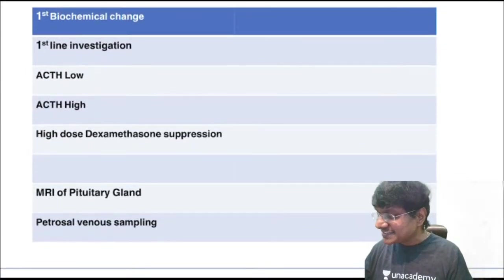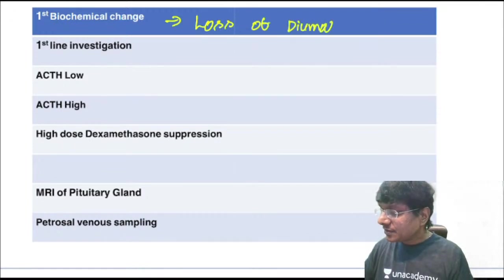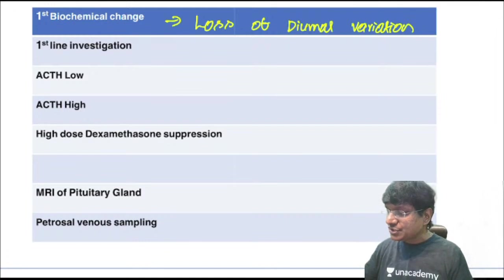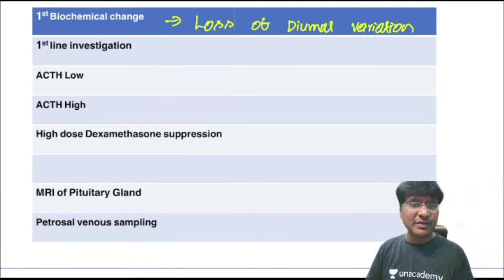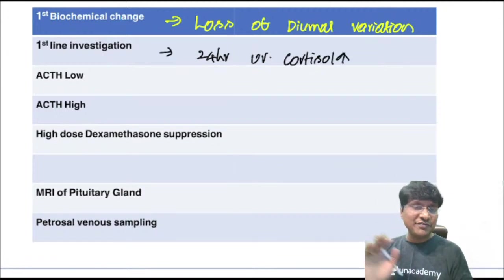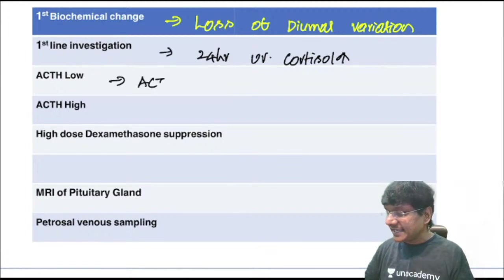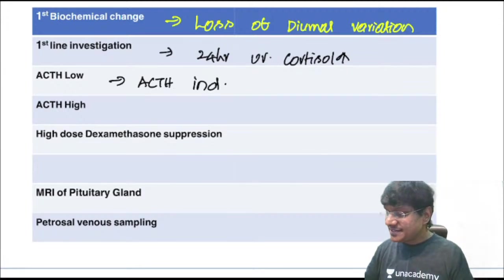Diagnosing Cushing's: the first biochemical change is loss of diurnal variation of cortisol. First line investigation is 24-hour urinary cortisol levels elevated. Then check ACTH: if ACTH is low, it is ACTH-independent Cushing's; if ACTH is high, it is ACTH-dependent Cushing's.